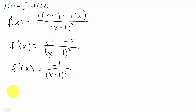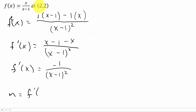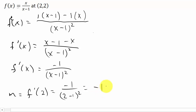Now to find the slope, the slope m is just the derivative evaluated at this point. You can see in our function we only have a variable of x, so we're going to plug in the x-coordinate, which is 2. f'(2) is equal to negative 1 over (2 minus 1) squared. And this is going to give us a slope of negative 1.